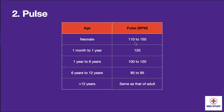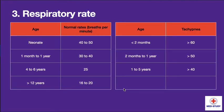Now going to pulse, which varies as per age. In neonate it is 110 to 150 beats per minute. From one month to one year it is 120 beats per minute. From one year to six years it is 100 to 120 beats per minute. From six years to 12 years it is 85 to 95 beats per minute. And more than 12 years it is same as that of adults.